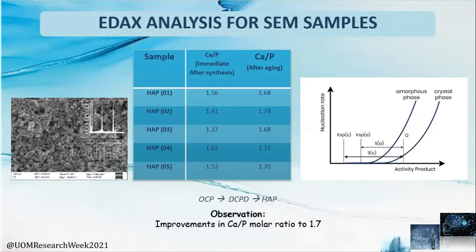In the EDACS analysis, we confirmed hydroxyapatite formation. We performed two EDACS analyses for one sample — just after synthesis and after aging. After synthesis, there is a deviation from the characteristic calcium-to-phosphorus molar ratio of 1.67. After aging, our ratio developed to approximately 1.67, which is the characteristic calcium-to-phosphorus molar ratio confirming hydroxyapatite formation.